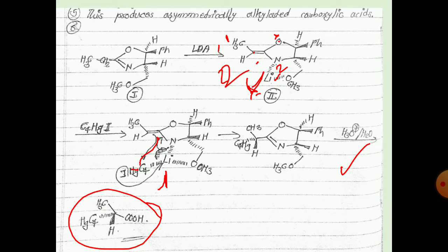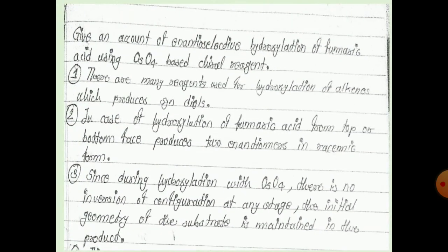The product is the asymmetrically alkylated carboxylic acid. The next question: give an account of enantioselective hydroxylation of fumaric acid using the OSO4-based chiral reagent. There are many reagents used for the hydroxylation of alkenes which produce syn-diol as the product.